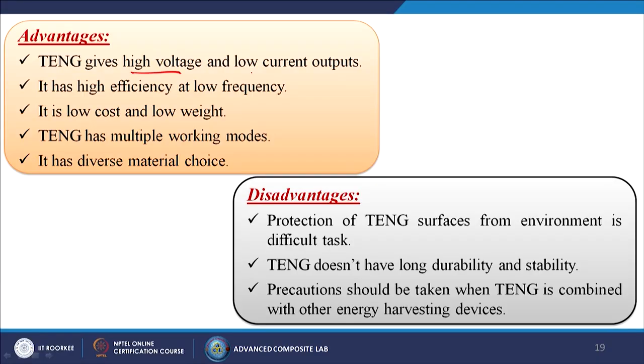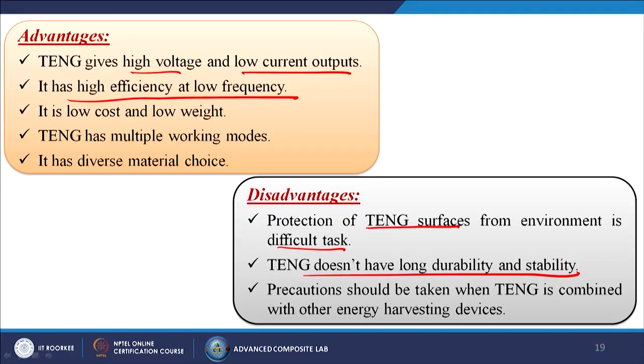Advantages of TENG: it gives high voltage and low current output, has high efficiency at low frequency, is low cost and low weight, has multiple working modes, and has diverse material choice. Disadvantages: protection of TENG surfaces from the environment is a difficult task — if not cleaned, contaminants will come and the charge transfer between the two surfaces will be reduced. TENG does not have long durability and stability because after a certain time the material may degrade and lose physical or chemical properties. Precautions should be taken when TENG is combined with other energy harvesting devices to ensure material compatibility.